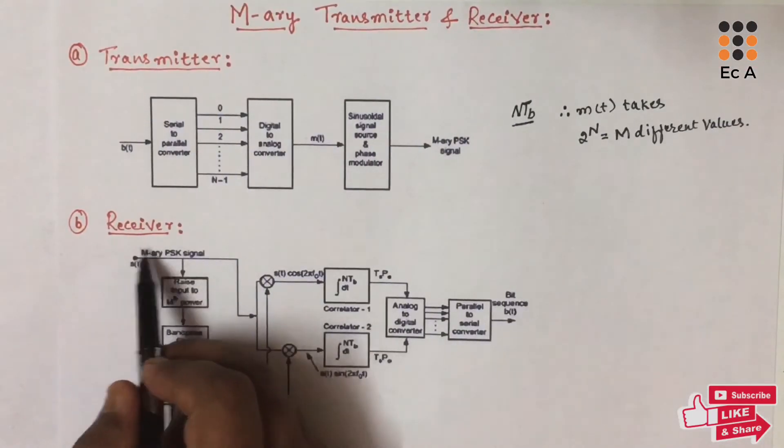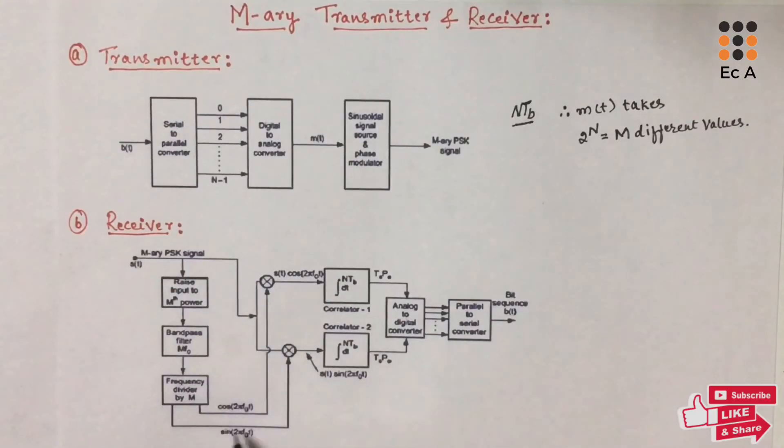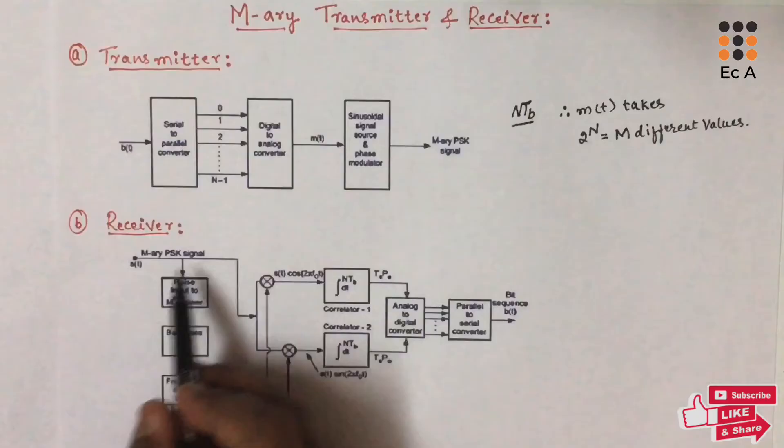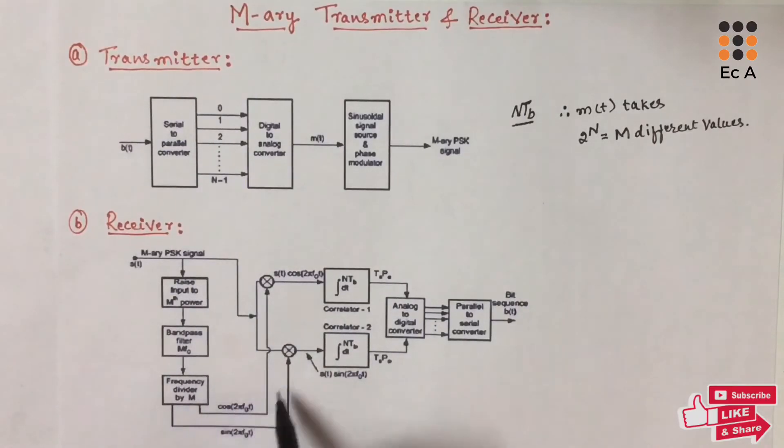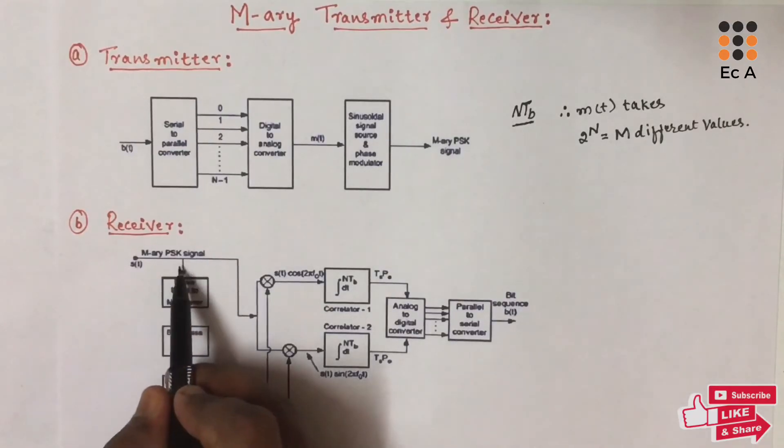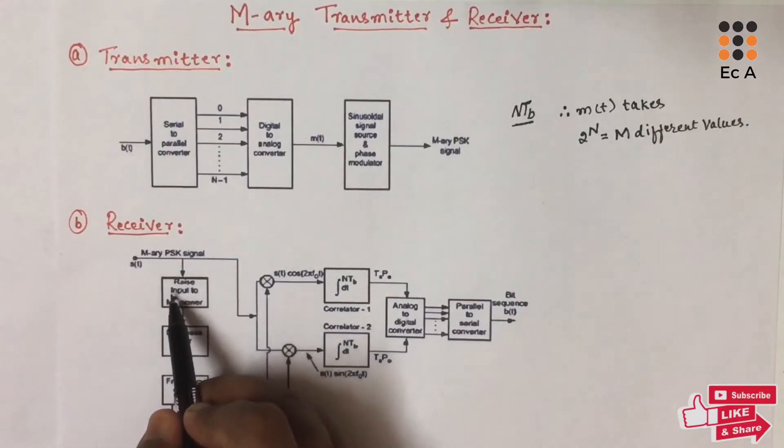Now, let us understand the M-ary receiver. Figure B shows M-ary PSK receiver. This receiver is similar to the QPSK receiver which we have understood in our previous class. The input signal is raised to the mth power.